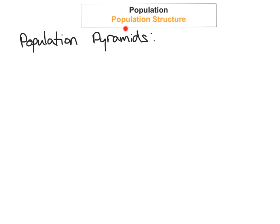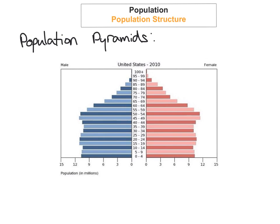Population structure can be shown on population pyramids, and it's really important that we understand these population pyramids. This here is a population pyramid, and population pyramids can show us a few things. What's really obvious is that it can show us the sex — the males and females — and then it shows us the ages. Along the bottom it shows the percentage of people in each age category group.